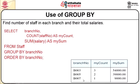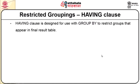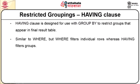We are slowly progressing towards higher sets of queries, starting from SELECT FROM, SELECT FROM WHERE, SELECT FROM WHERE ORDER BY, SELECT FROM WHERE HAVING, and SELECT FROM WHERE GROUP BY. The HAVING clause is designed for use with the GROUP BY clause to restrict groups that appear in the result table. This is similar to WHERE, but WHERE filters individual rows whereas HAVING filters groups.